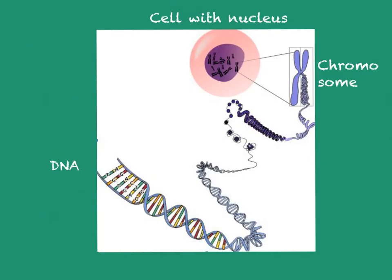Today we understand how traits are passed on far better. Traits are passed on through DNA, and in a cell you have the nucleus, and in the nucleus you have the DNA. The DNA is generally organized into chromosomes, and chromosomes are just really, really long molecules of DNA. Here you can see the double helix.